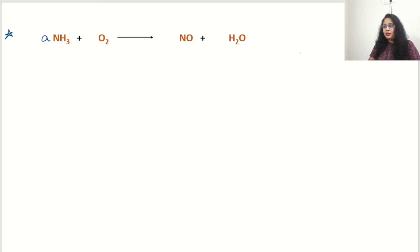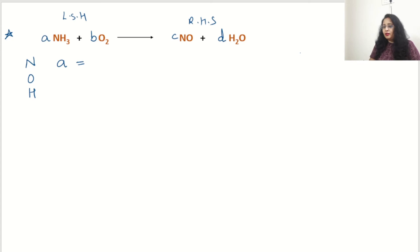Let's do one more example to sharpen your knowledge. Again, the first step is putting the coefficients A, B, C, and D. For the reaction NH3 + O2 → NO + H2O, three elements are present: nitrogen, oxygen, and hydrogen. For nitrogen: left hand side is A, right hand side is C. For oxygen: 2B on left, C + D on right. For hydrogen: 3A on left, 2D on right.